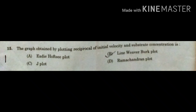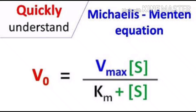The next question: the graph obtained by plotting the reciprocal of initial velocity against substrate concentration is — option A: Eadie-Hofstee plot, option B: Lineweaver-Burk plot, option C: Hanes plot, option D: Ramachandran plot. This question is from the topic of enzyme kinetics. The important equation here is the Michaelis-Menten equation: v₀ = Vmax × [S] / (Km + [S]), where v₀ is the initial velocity, Vmax is the maximum velocity, [S] is the substrate concentration, and Km is the Michaelis constant — the substrate concentration required to produce half the maximum velocity.